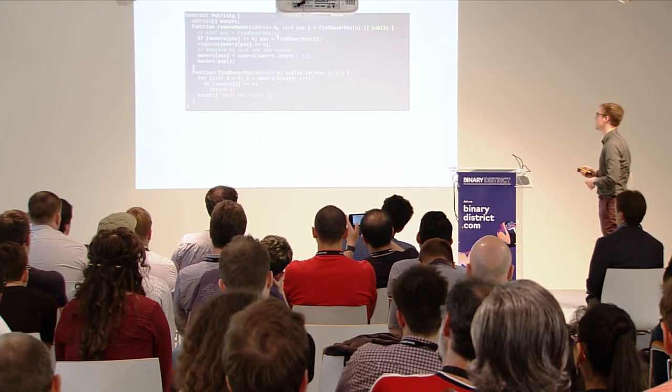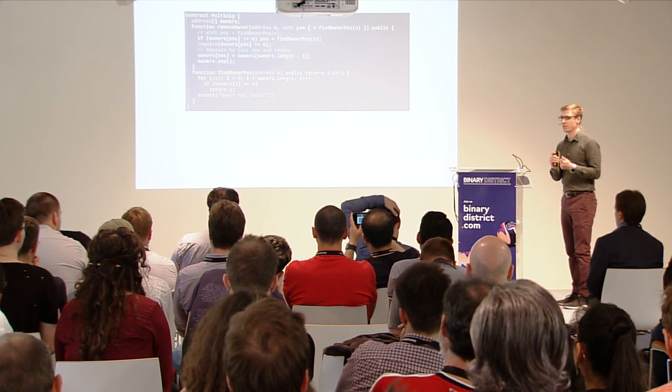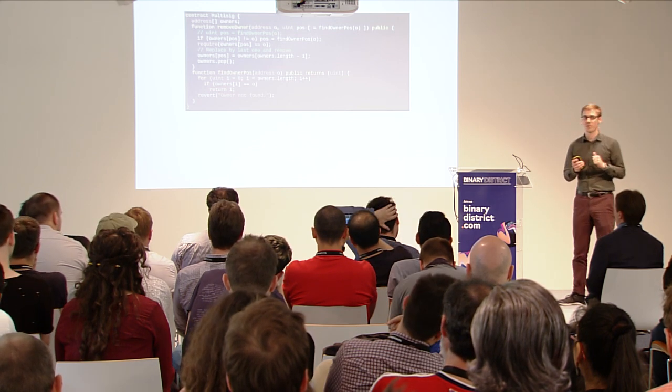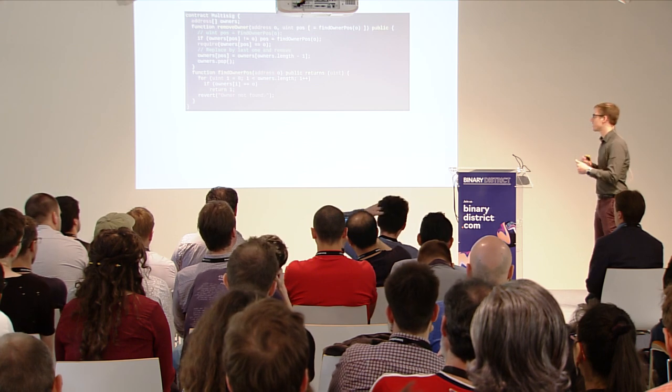We can even insert a fallback mechanism that says: if the advice is wrong, fall back to actually searching for the owner on-chain. This has the advantage that if there's a race condition — a timing problem between two transactions that remove owners — then without the fallback the second transaction will fail because it has the wrong position. With the fallback mechanism it won't fail, but it will be more costly.